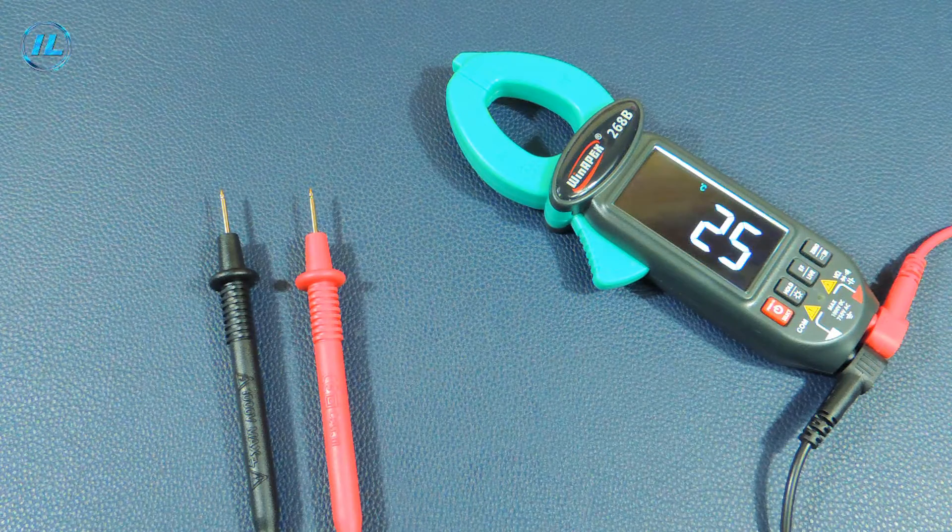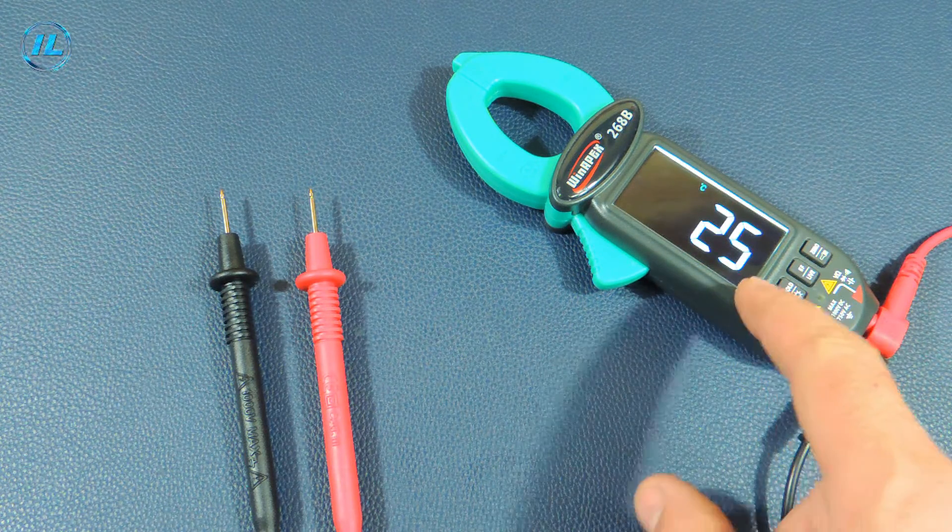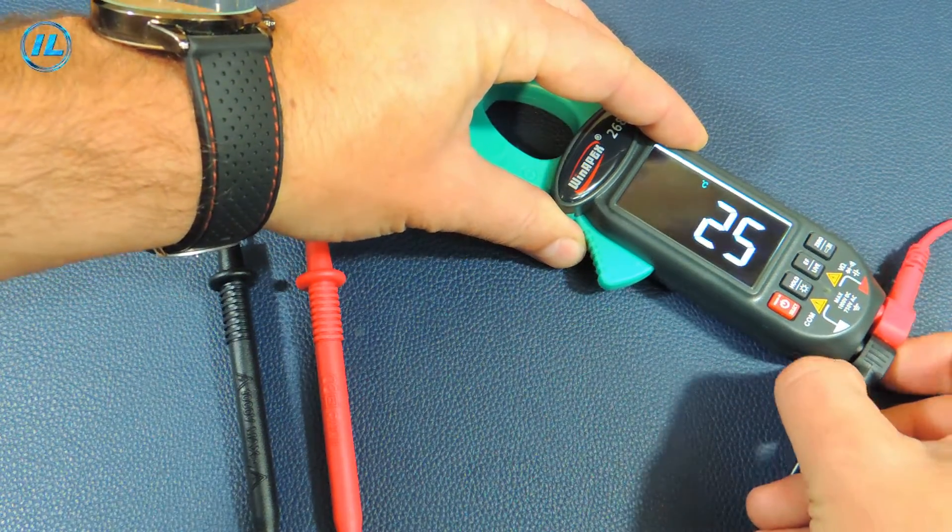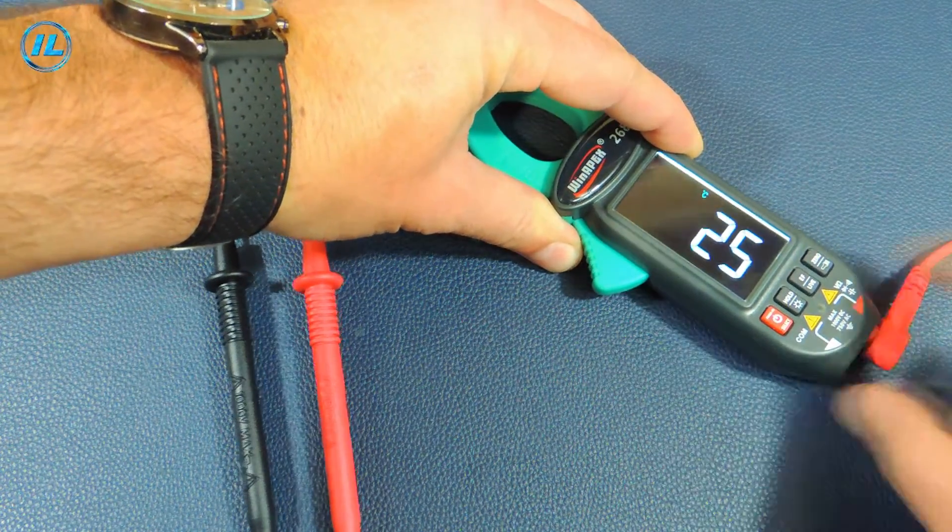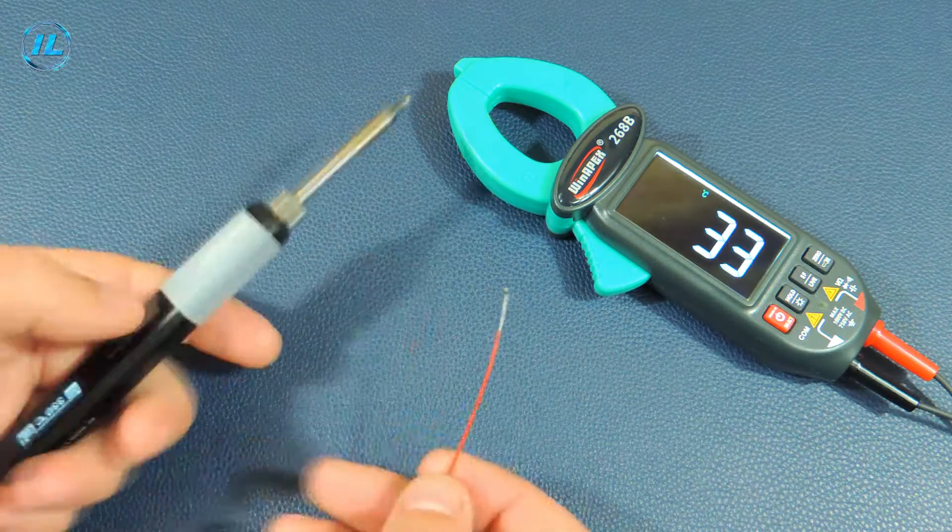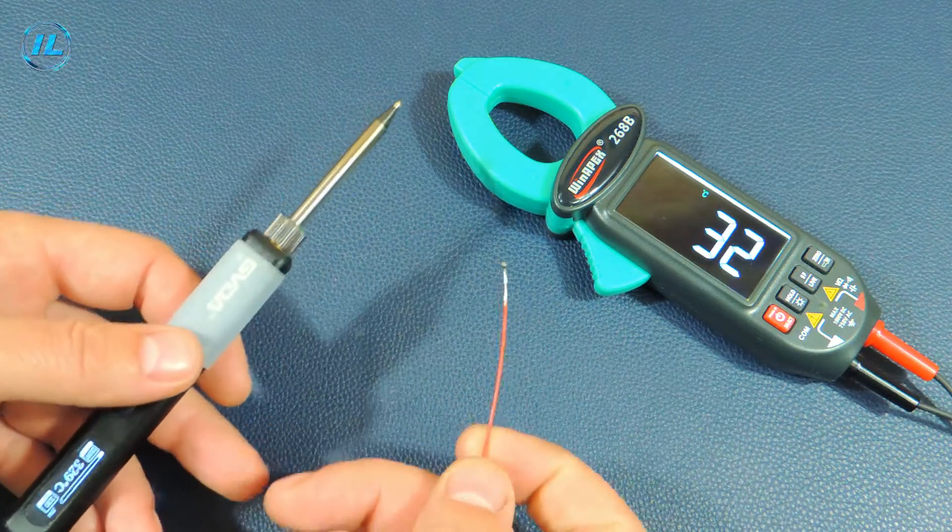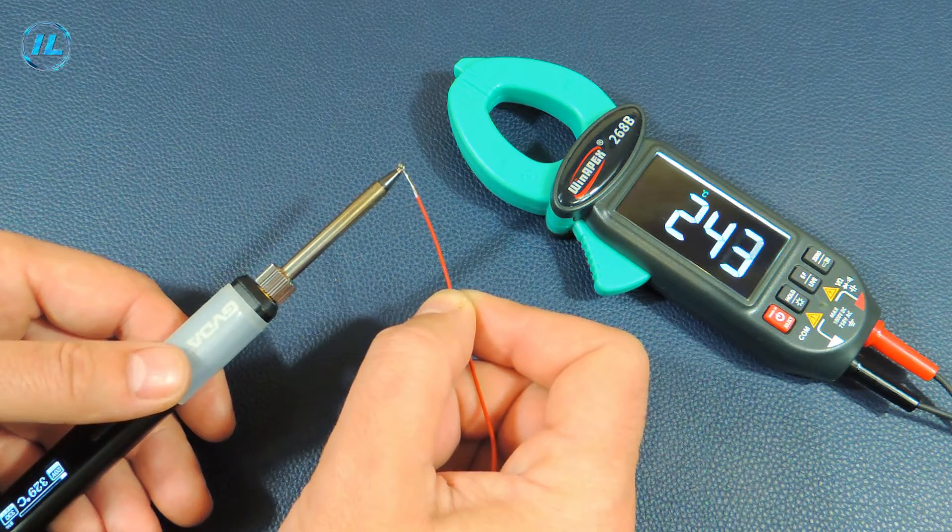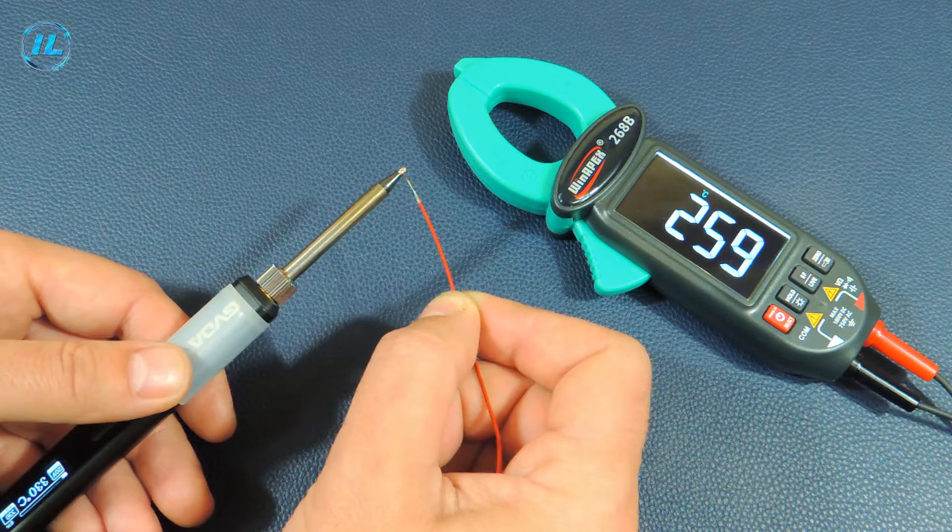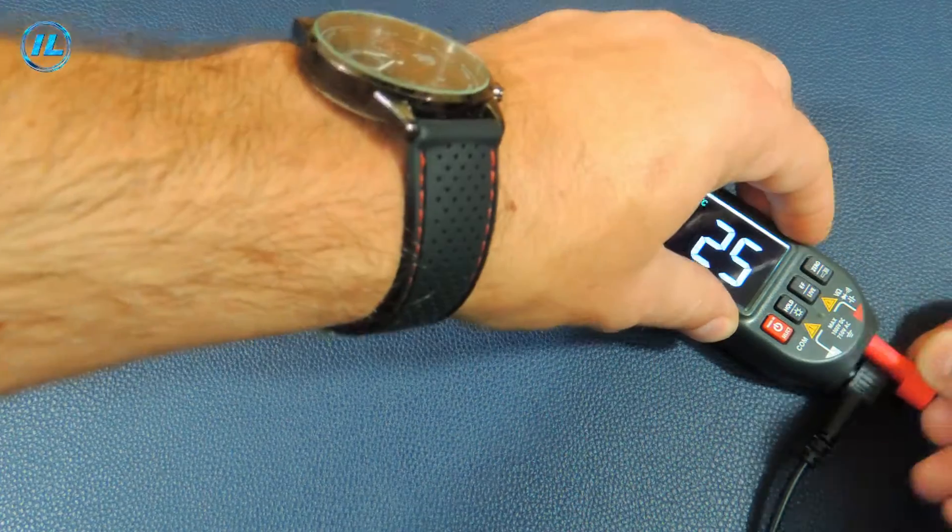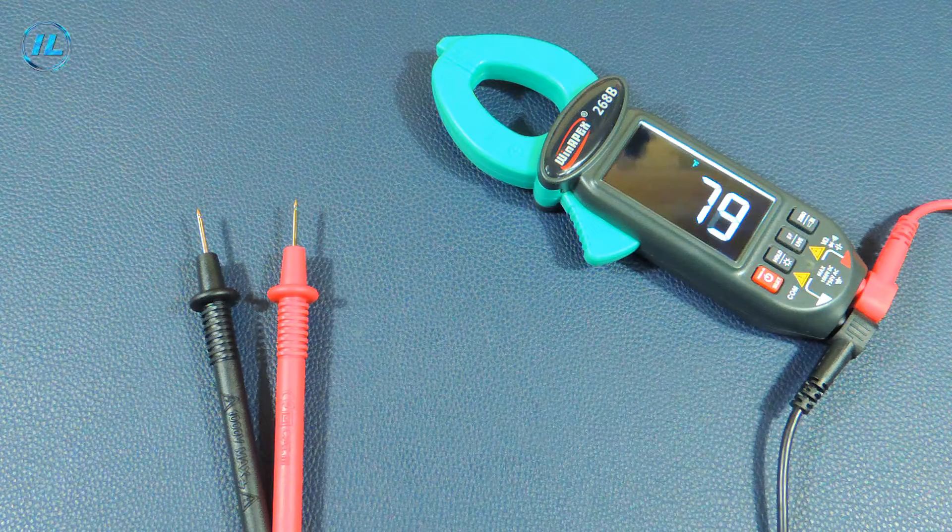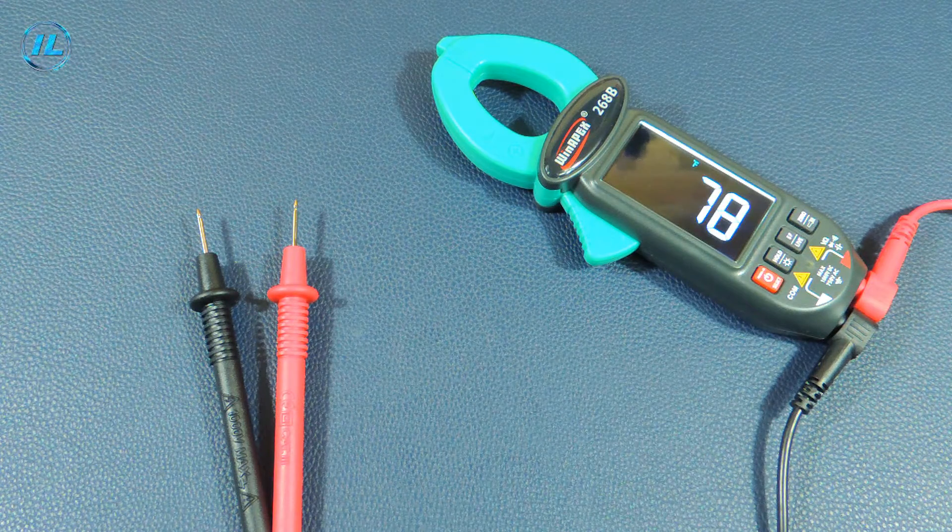Next, the temperature measurement. Now the device shows the temperature inside the case, 25 degrees. When a thermocouple is connected, the temperature from it is displayed on the screen. Now I will measure the temperature of the soldering iron. The next item is also a temperature measurement, but in Fahrenheit.